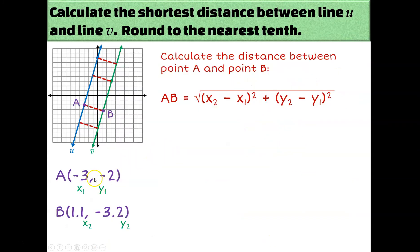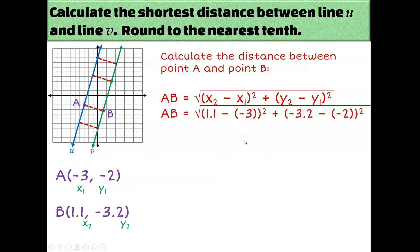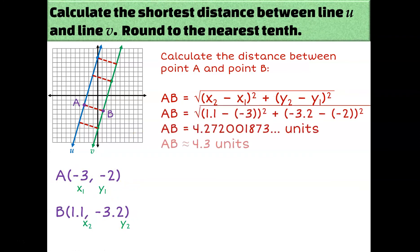A, remember, was the point (−3, −2). So now I can plug these coordinates into the distance formula and calculate the shortest distance between those two lines. It turns out to be approximately 4.3 units.